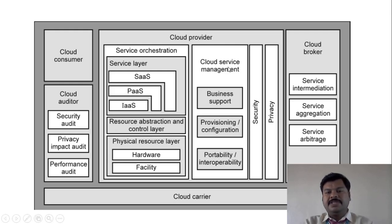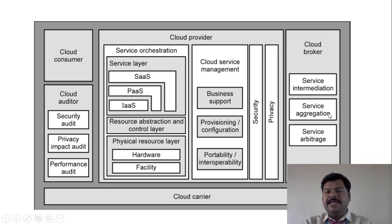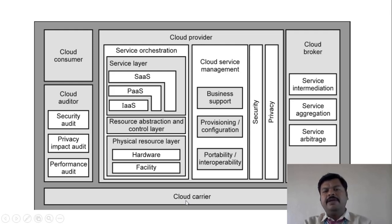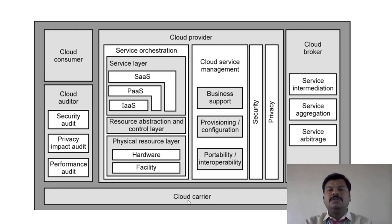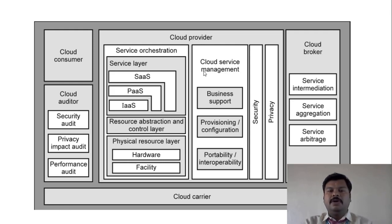Next we have cloud service management, which includes functions such as business support, provisioning, configuration, portability, interoperability, security, and privacy. The next building block is the cloud broker, which provides service intermediation, service aggregation, and service arbitrage. Finally, there is the cloud carrier. These five building blocks form the NIST cloud computing reference architecture, showing how the consumer interacts with the cloud provider and obtains cloud services.